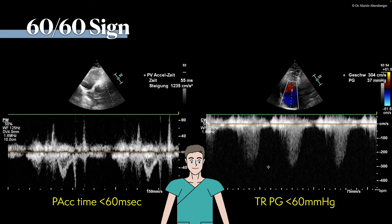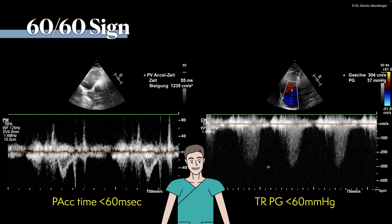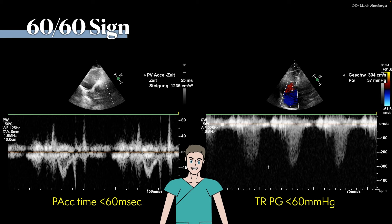A pulmonary acceleration time below 60 milliseconds shows a very high likelihood that pulmonary hypertension is present — in this case an acute form due to pulmonary embolism. The second measurement is the continuous wave Doppler across the tricuspid valve, where we see tricuspid regurgitation and a degree of pulmonary hypertension. For the 60-60 sign, the TR pressure gradient should be below 60 mmHg. In pulmonary embolism it very often doesn't reach 60 mmHg — typically in the range of 40-45 mmHg.